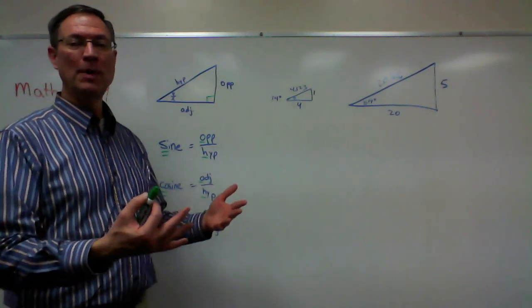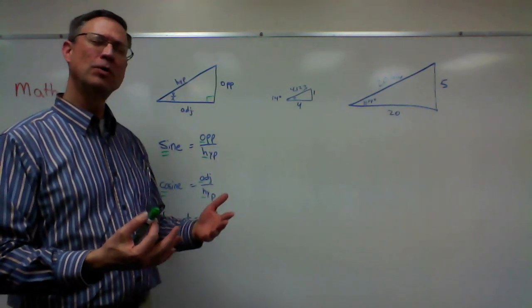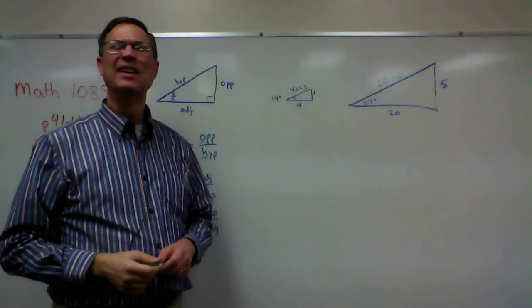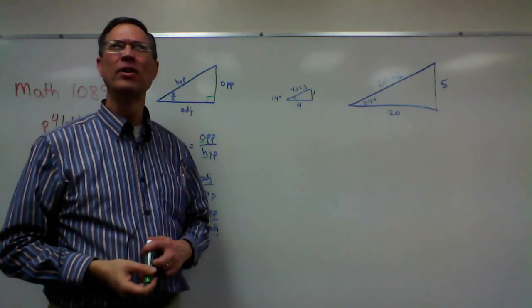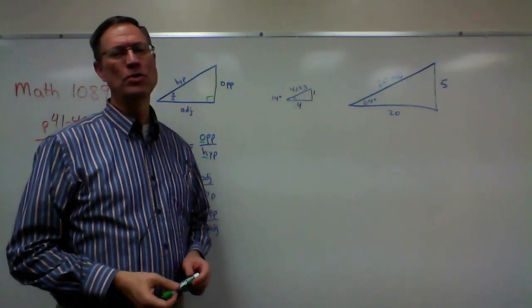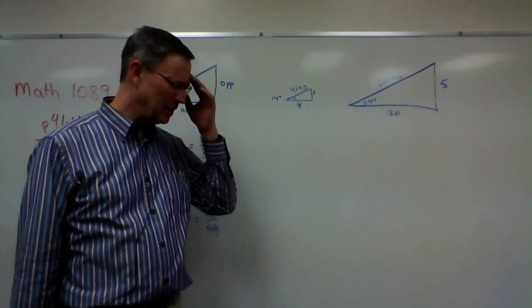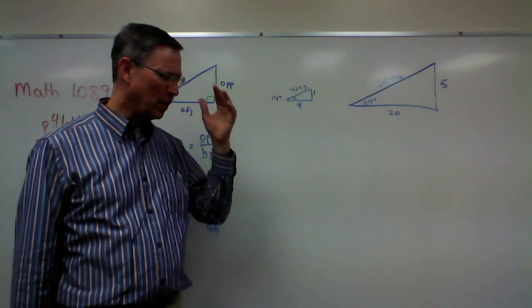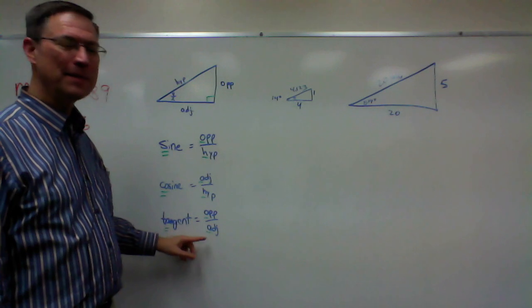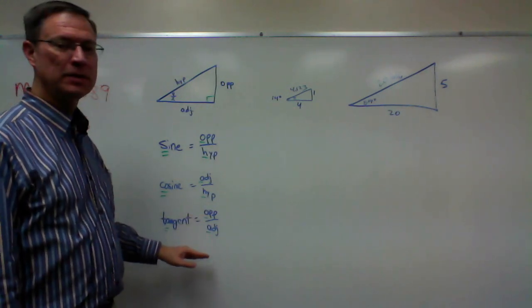All right. So, say it with me this time. And watch the pattern. S-O-H-C-A-H-T-O-A. Some old horse caught another horse, taking oats away. Some old horse caught another horse, taking oats away. You just keep saying it until you're saying it in your sleep. You wake up in the morning, mom asks you at breakfast, what was that thing about the horse? Some old horse caught another horse, taking oats away. And I'm serious. As you get on in your math and you remember that little saying, and then you're trying to do a problem with cosine, you're trying to think, oh, cosine. What was cosine? Caught another horse. Oh, yeah. Adjacent over hypotenuse. We're trying to think tangent. I always get tangent mixed up. Taking oats away. Oh, yeah. Taking oats away. All right. And so, you get the right sequence.